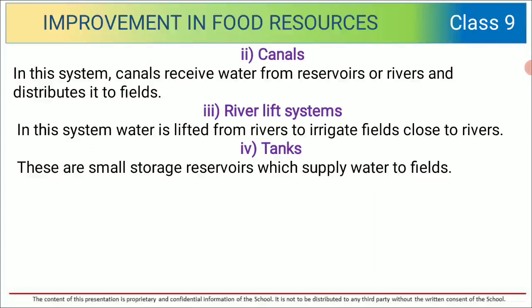In the canal system, canals receive water from reservoirs or rivers and distribute it into the fields. In the river lift system, water is lifted from rivers to irrigate fields close to rivers. Tanks are small storage reservoirs that supply water to fields.